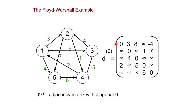For example, the entry 4,2 would be the weight from node 4 to node 2 — I don't have an edge, so I have infinity there. The entry 1,3 will be the weight from node 1 to node 3, which is 8. This 0 is the weight from 3 to 3 — there is no edge, but the weight to go from a node to itself is 0, so you have zeros on the diagonal. The entry 2,5 is the weight to go from 2 to 5, which is 7.